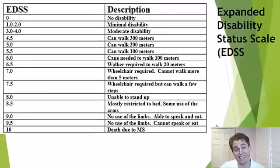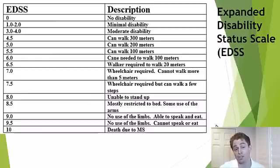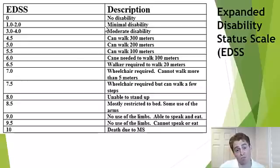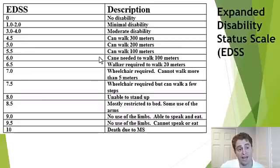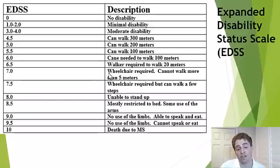The best outcome in MS trials is disability and prevention of disability. The most common measure used is the EDSS, or Expanded Disability Status Scale — it's a 0 to 10 scale where 0 is no disability and 10 is death due to MS. Scores of 1–3 reflect milder disability; 4 is moderate disability; 4.5–5.5 is decreasing ability to walk long distances; 6.0 requires a cane; 6.5 requires a walker; 7 requires a wheelchair for distances longer than 5 meters; and higher levels refer to declining upper extremity function.